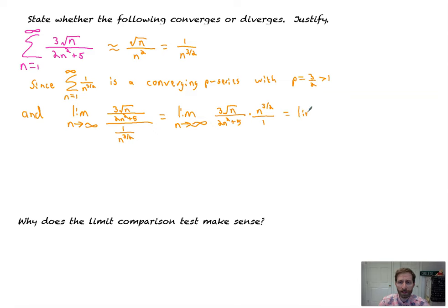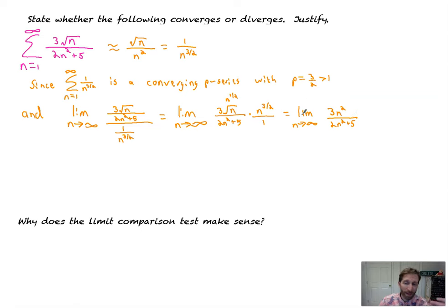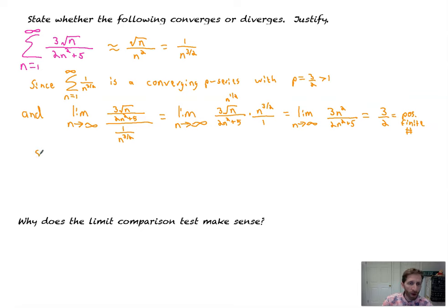So if we look at this, this simplifies to the limit as N goes to infinity of N to the one half times N to the three halves, which is N squared — that's like N to the one half — you add those exponents, all over two N squared plus five. Now, if you need a review of limits at infinity, go back to chapter one towards the end. This plus five basically doesn't matter, and this simplifies down to three halves. So that's a positive finite number — which is equal to a positive finite number. So this series, N equals one, three root N over two N squared plus five, converges by the limit comparison test.